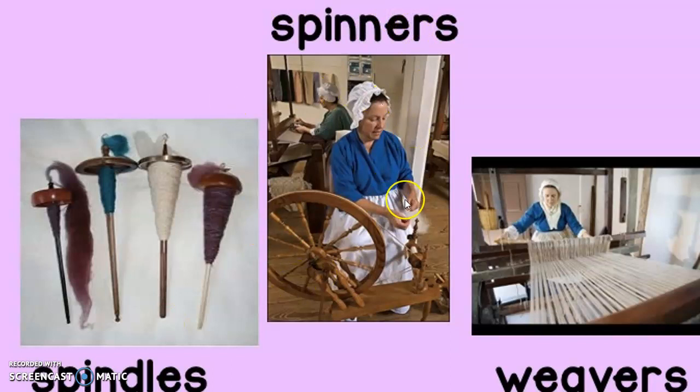Here's our next word: spinners — tradespeople who twist cotton, flax, and wool into thread and yarn using a spinning wheel. Our last vocabulary word is weavers — tradespeople who make cloth from thread or yarn by weaving the strands together on a loom.